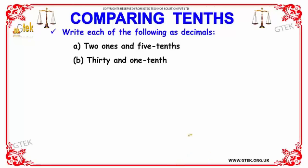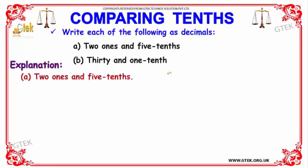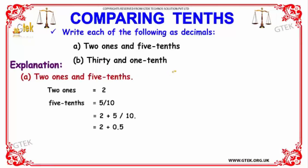Now let's look at an example. We have two ones and five tenths. The next one is about 30 and one tenth. Let's see how each has been represented.